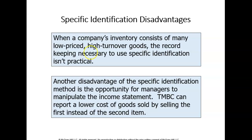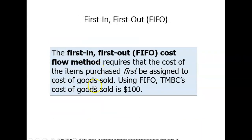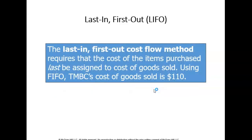When tracking exact costs isn't practical, companies can use cost flow methods such as FIFO, LIFO, or the weighted average approach. FIFO says first in, first out. With the FIFO cost flow method, we assume whatever item we purchased first, we sell first. So if we sold one item under FIFO, we assume we sold the first item, and cost of goods sold would equal $100.